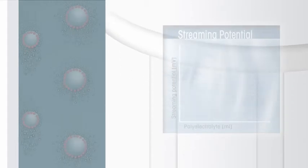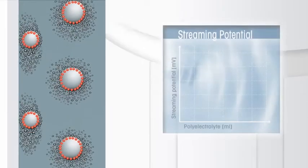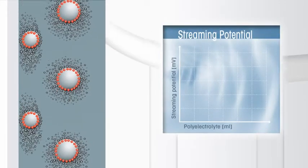Poly-DADMAC is used for anionic samples and PESNA or PVSK for cationic samples. These titrants are applied because of their short and straight molecules of high charge density, which supports an almost one-to-one charge reaction.